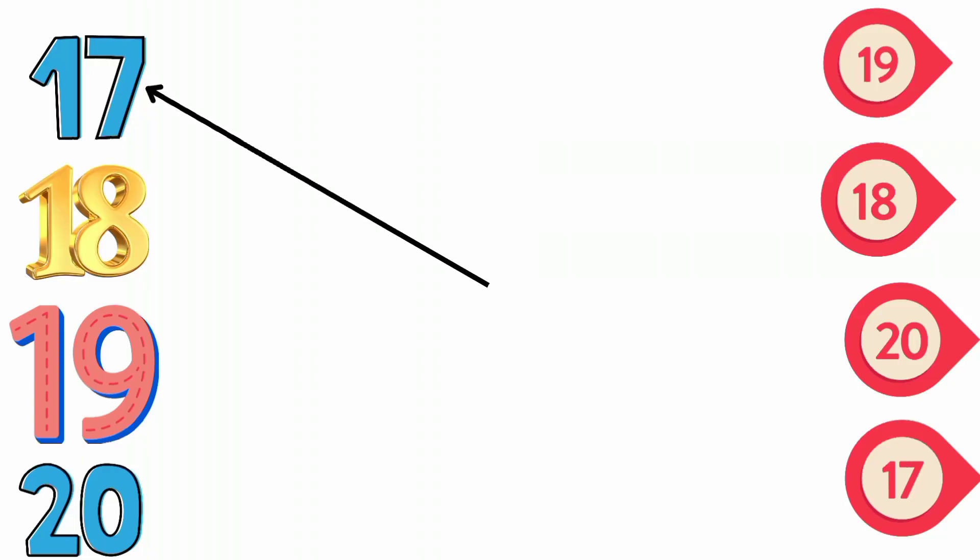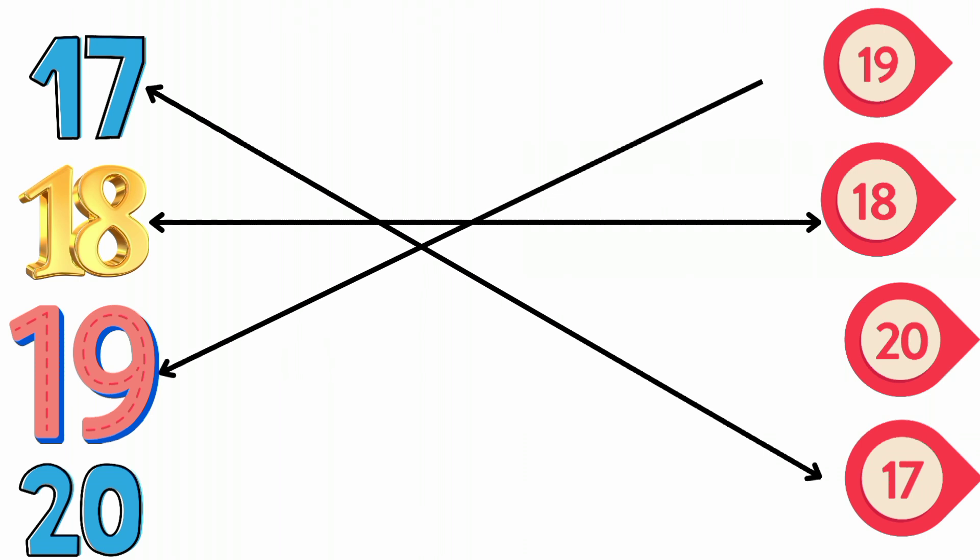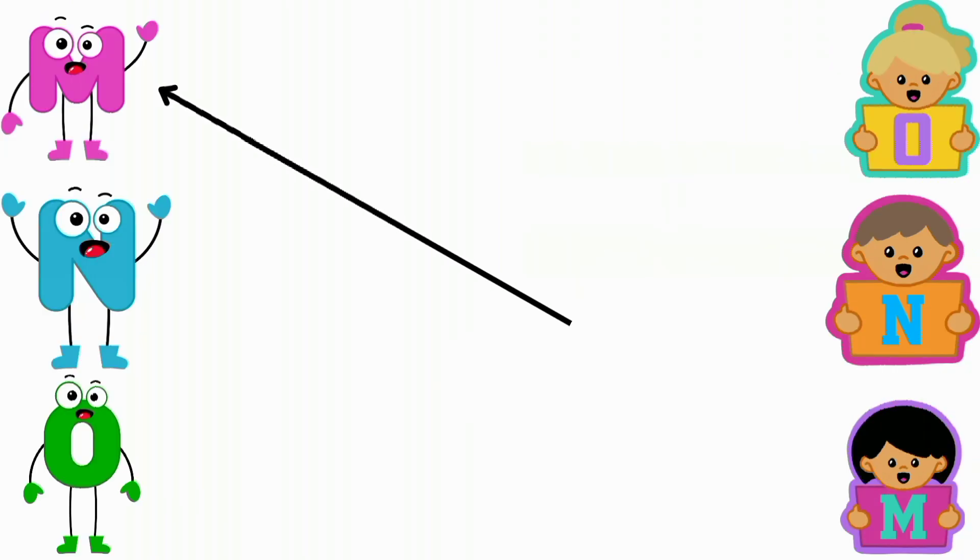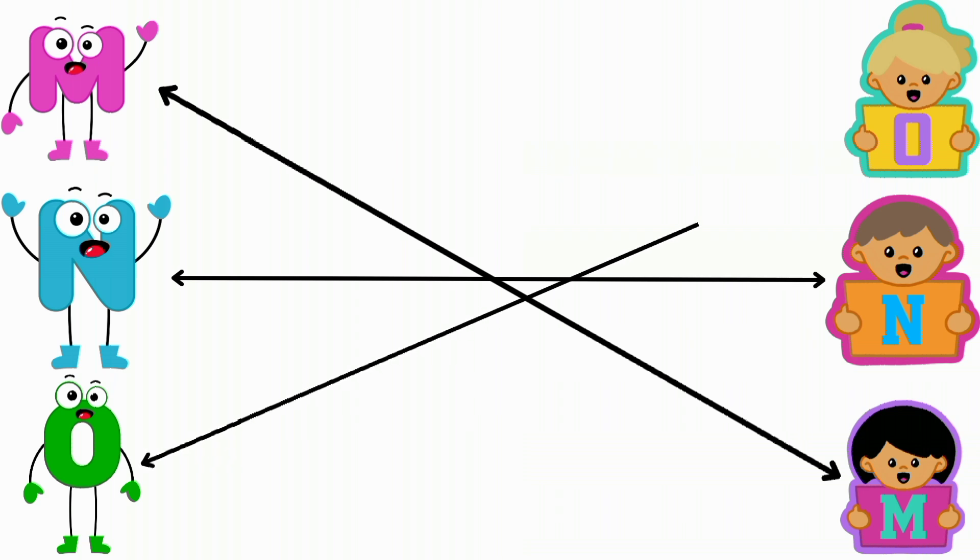Seventeen. Eighteen. Nineteen. Twenty. M for monkey. N for nest. O for orange.